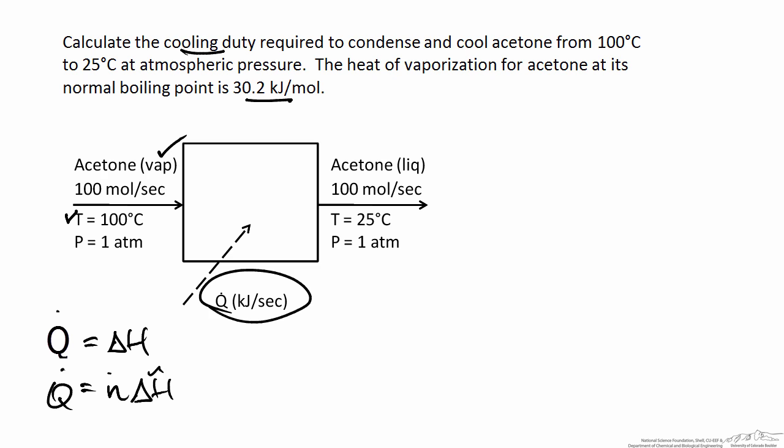If we had information about the specific enthalpy of acetone at any temperature and pressure, as we do with water in the steam tables, this would be very easy — we could look up the specific enthalpy at the outlet and inlet and take the difference. Without that information, we have to set up a hypothetical path that allows for the calculation of the specific enthalpy for this process. The key property that allows this is that enthalpy is a state function, meaning the change in enthalpy only depends on the initial and final conditions. Our initial condition is acetone vapor at 100°C and atmospheric pressure.